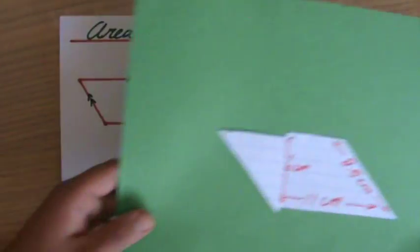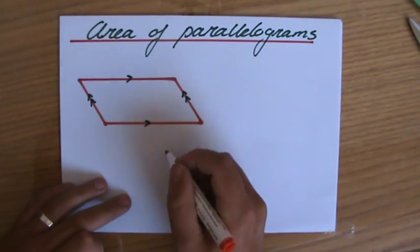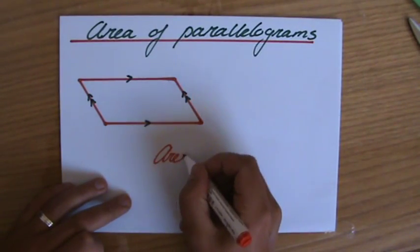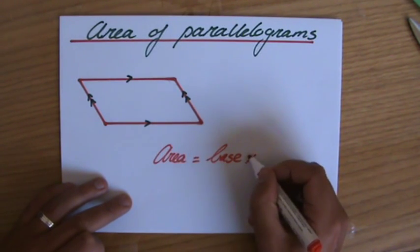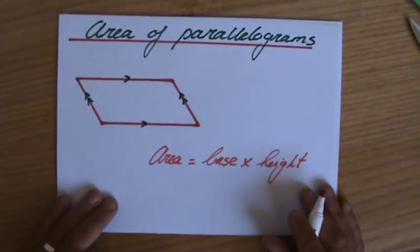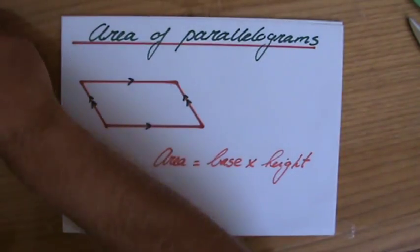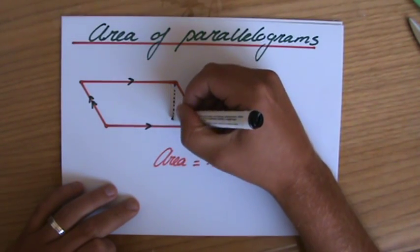So if I write that down for you, the area of a parallelogram is base times height. And you have to realize that the base and the height make the angle of 90 degrees. So I could put, let's say, a dotted line here.